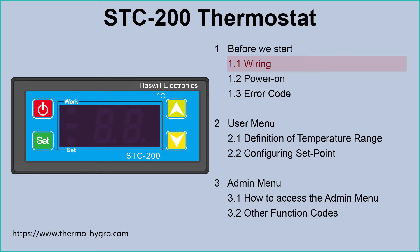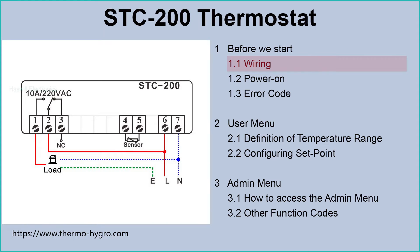Let's get started. The first step is to complete the wiring like this wiring diagram. This load can be a compressor controller used to control refrigeration. It can also be a heating controller, which max supports 99 Celsius degrees. Or just use it as a temperature monitor and wire an external alarm.